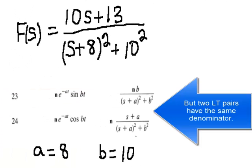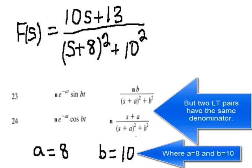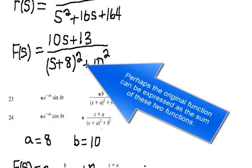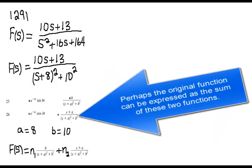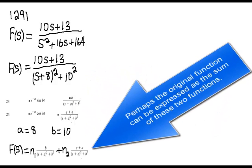But two Laplace Transform pairs have the same denominator, where a equals 8 and b equals 10. Perhaps the original function can be expressed as the sum of these two functions.